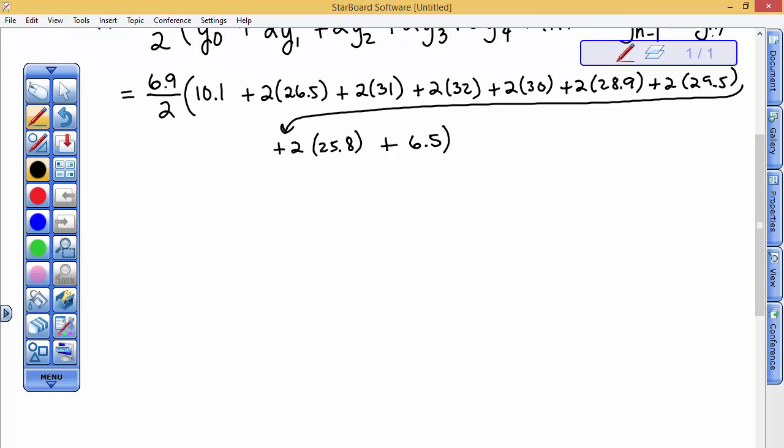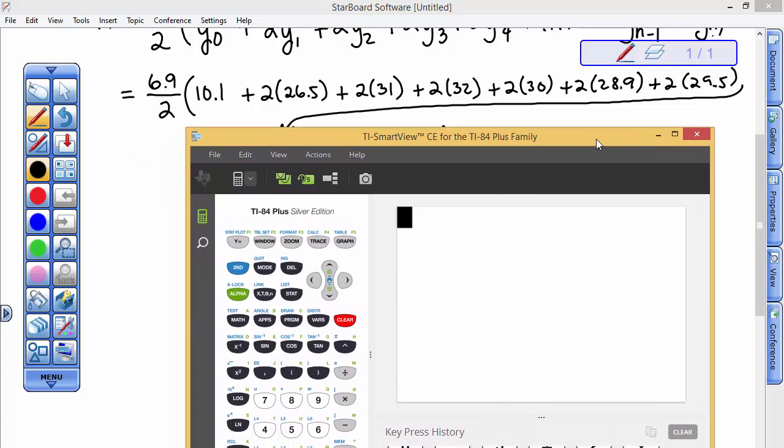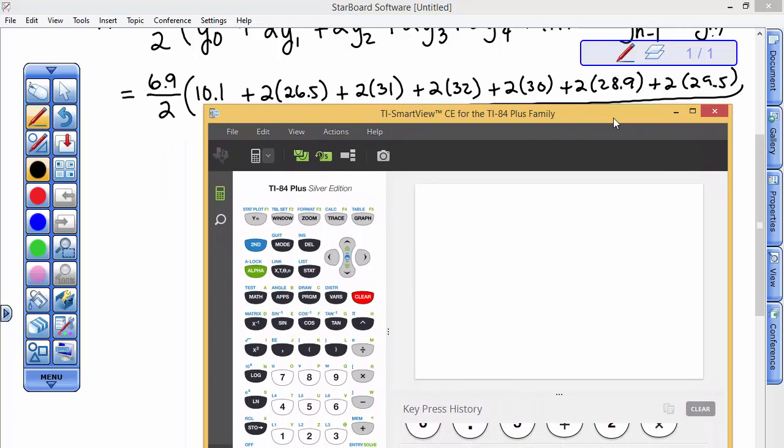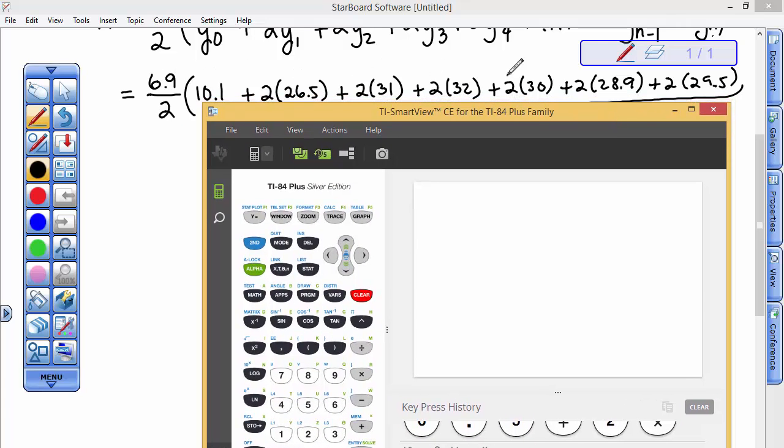I'll probably move the calculator a little bit down as we go. But this is the calculation I'm going to do, and I'm going to try to demonstrate it right here on the calculator. The simplest way, not make any mistakes, is to go 6.9 divided by 2. Don't need parentheses. I'm going to open right here, open parentheses. 10.1 plus 2 times in parentheses.